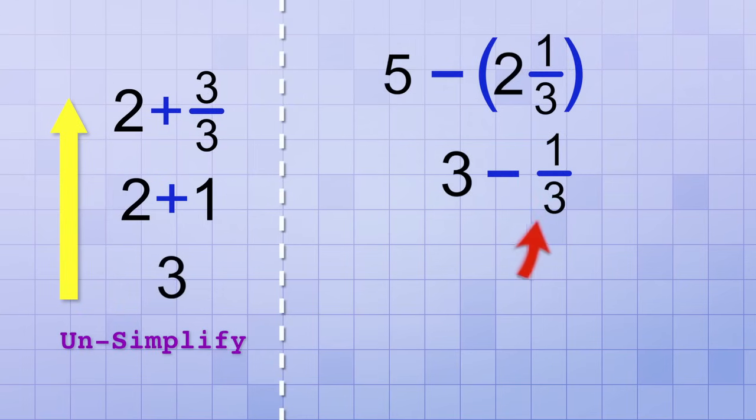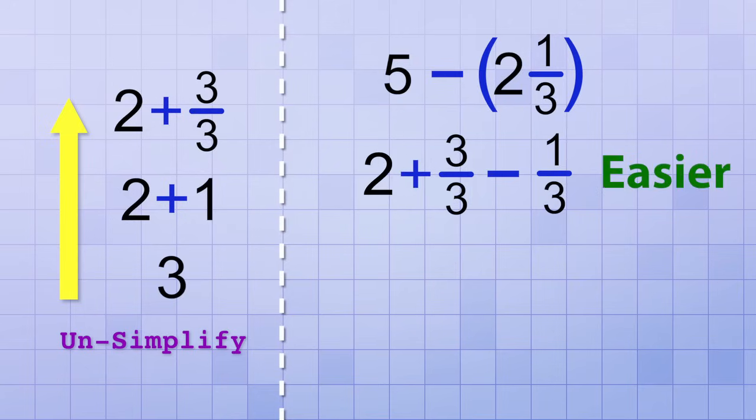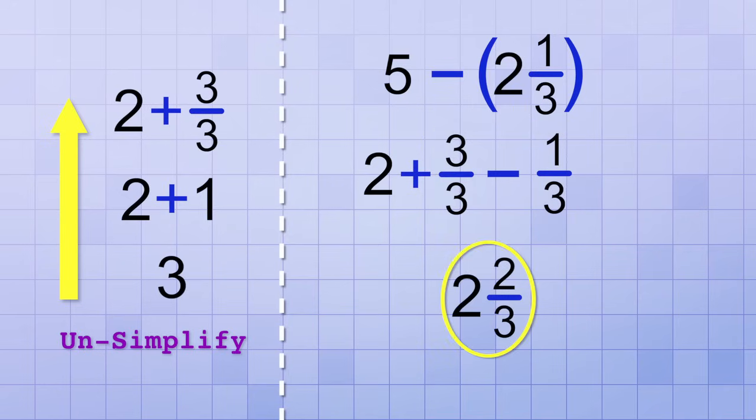We're trying to take 1 third away from 3, right? So let's rewrite 3 as 2 plus 1 and then let's rewrite 2 plus 1 as 2 plus 3 over 3. Does the problem look easier to do now? We converted part of the whole number into the whole fraction 3 over 3 and we already know how to subtract fractions. 3 over 3 minus 1 over 3 is 2 over 3. So that means our final answer is 2 and 2 thirds.